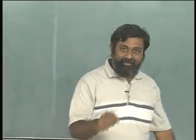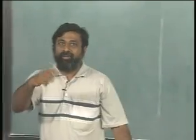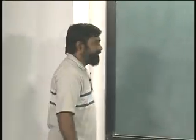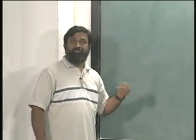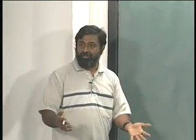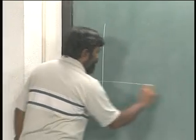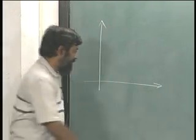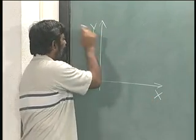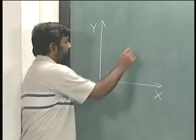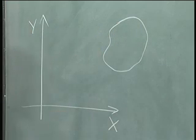Having understood the time derivative of a vector R, let us use that fact in order to derive the velocity of a particular rigid body. We start from a fixed frame and consider a body at a particular instant of time.